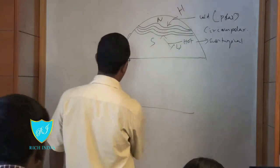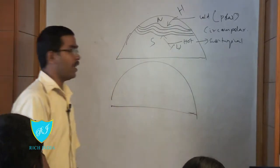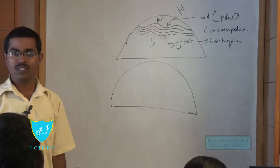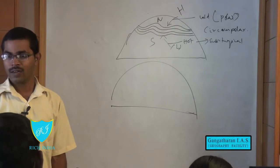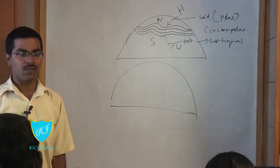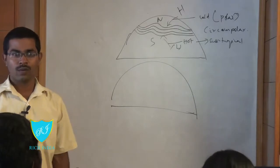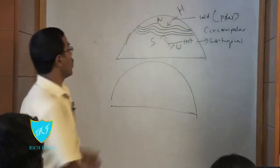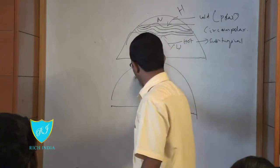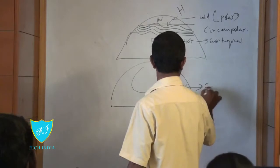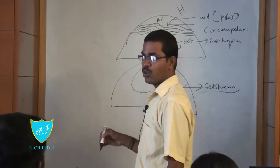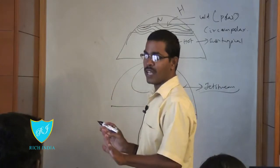Then it will form a meandering pattern. In the winter solstice, the pressure gradient moves towards the south — towards the southern hemisphere. In the summer solstice, the pressure gradient moves northward, so the jet stream does not extend further toward the equator. But in winter solstice, it extends toward the equator. This extension of the circumpolar vortex coming toward the equator is what we call the jet stream.